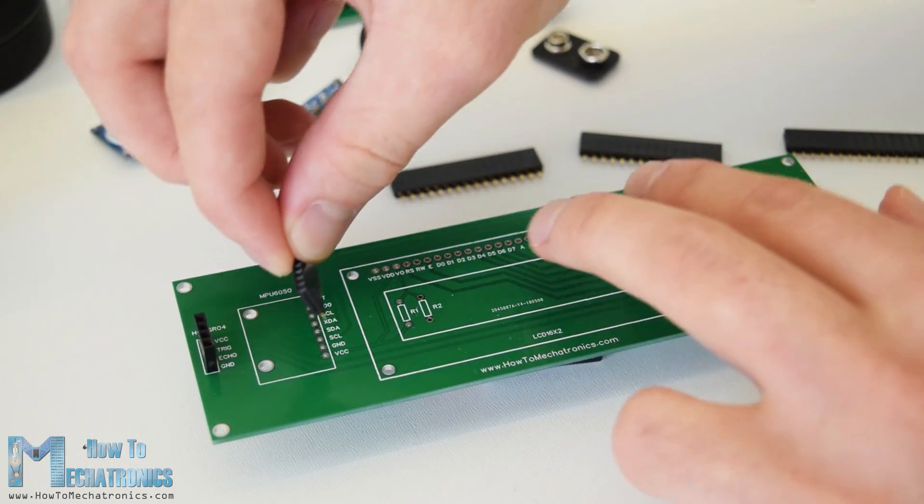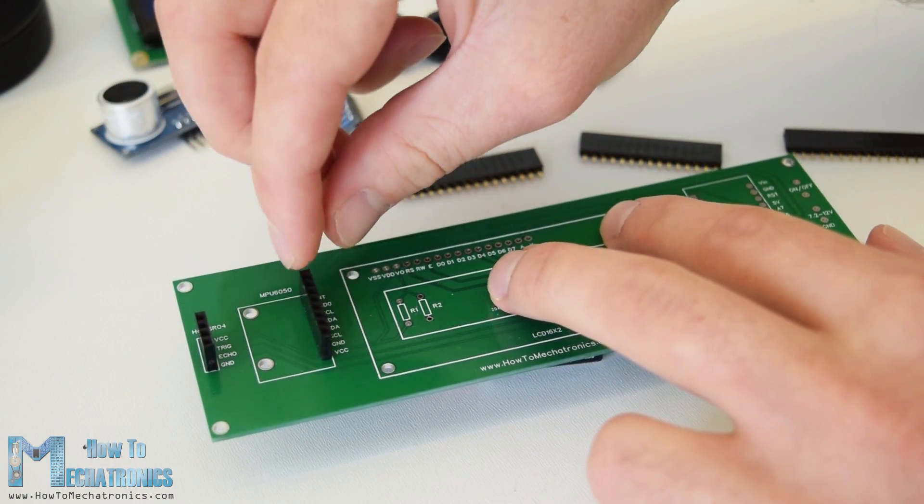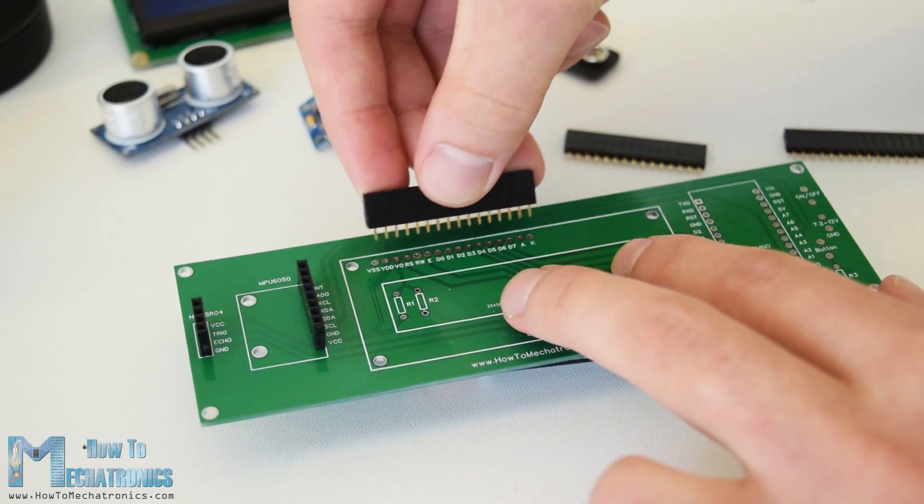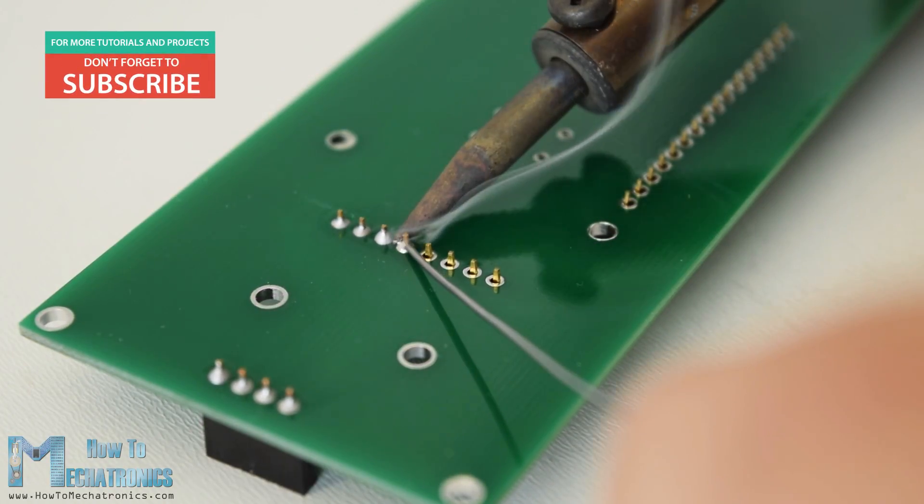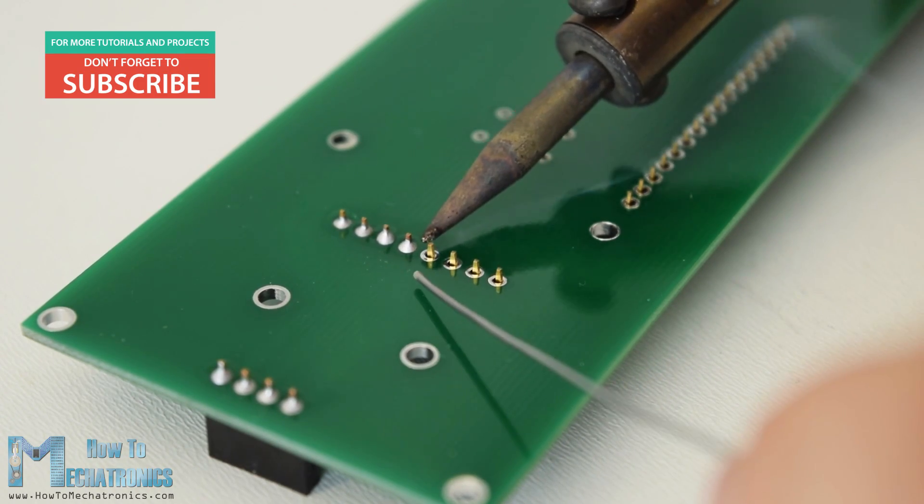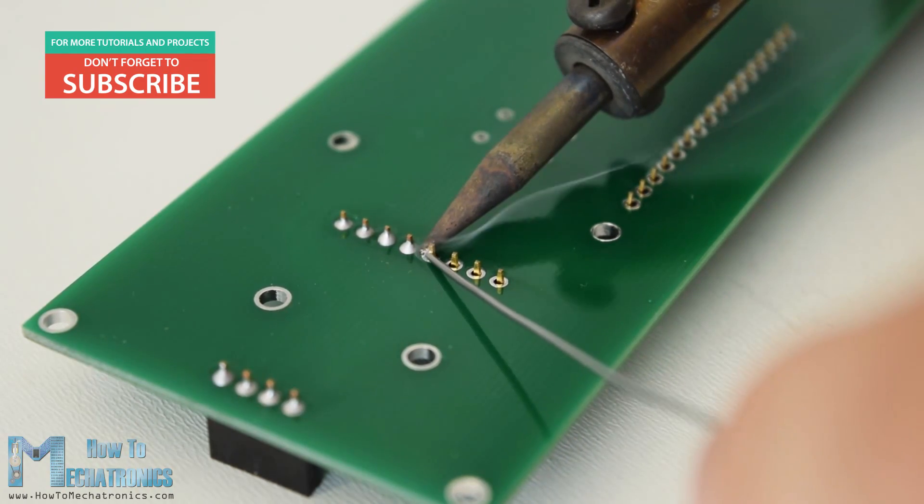Now we can start assembling the electronics for this project. I started by soldering pin headers on the PCB. In this way we can easily connect and disconnect the components when needed.